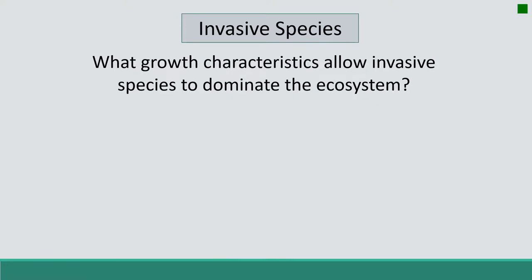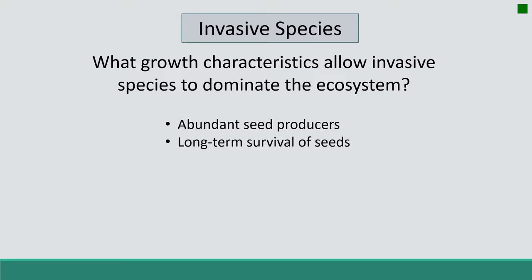Think for a moment about some of the growth characteristics that allow invasive species to dominate an ecosystem. Some of these characteristics include that they are abundant seed producers. Russian thistle, which is an invasive species, can produce over 200,000 seeds per plant.